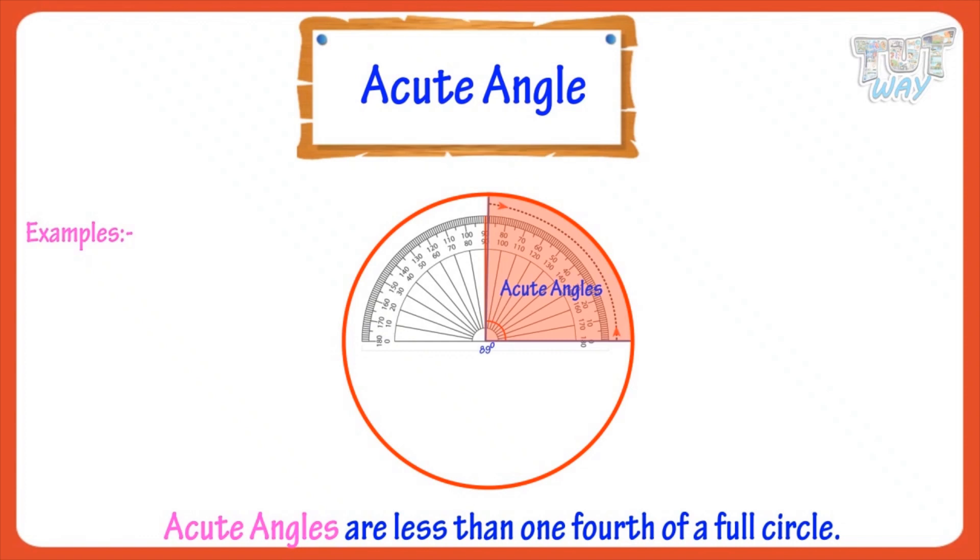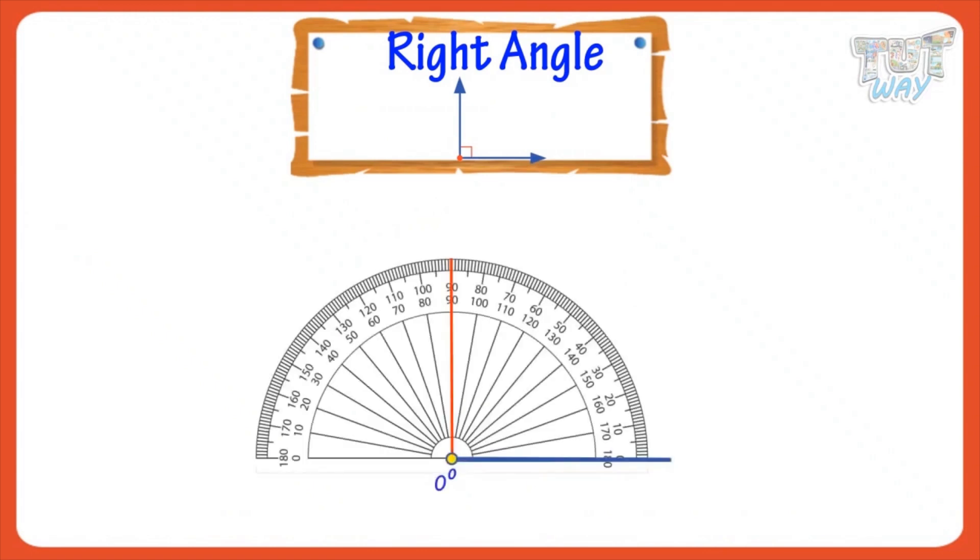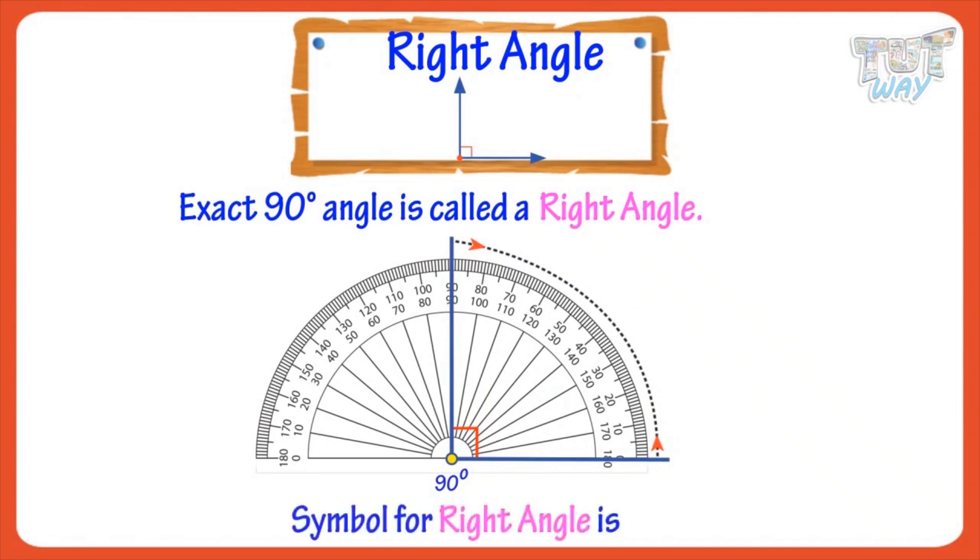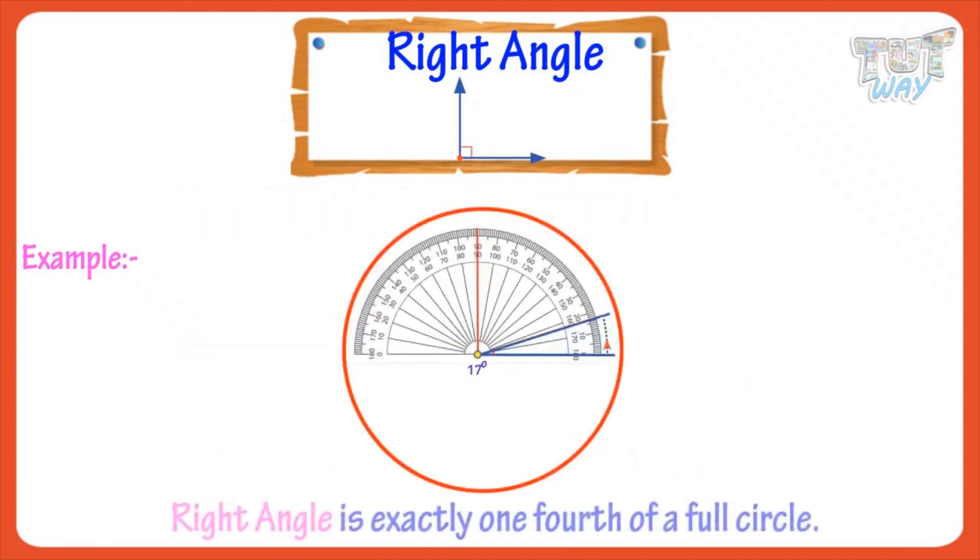Now, let's see what is a right angle. Exact 90 degree angle is called a right angle. Symbol for right angle is this. So we represent right angle like this. Here are some examples of right angles. So, right angle is exactly one-fourth of a full circle.